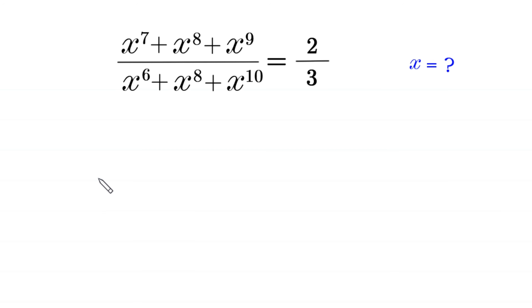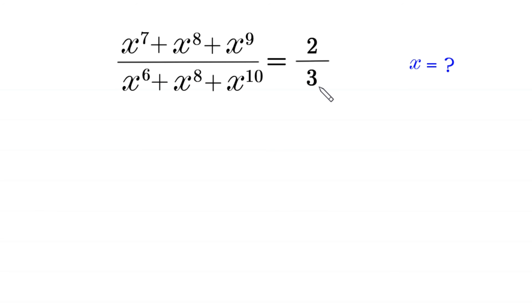Hello everyone, welcome. We will solve this algebra equation: x to the power 7 plus x to the power 8 plus x to the power 9, divided by x to the power 6 plus x to the power 8 plus x to the power 10, is equal to 2 over 3. Our job is to find all possible values of x.